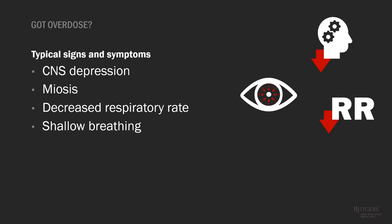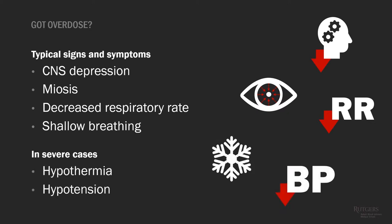Miosis is a common finding in opioid toxicity, but it is not a universal finding — some opioids do not cause miosis, and if a patient has taken more than one xenobiotic, they may have a mixed effect on the pupils. Respiratory depression remains the most clinically significant and the hallmark of opioid toxicity. It's very likely that a patient could come in having taken both an opioid and a stimulant. In severe cases of opioid overdose, you can get hypothermia and hypotension, especially with stronger opioids like fentanyl or large amounts of heroin or morphine.